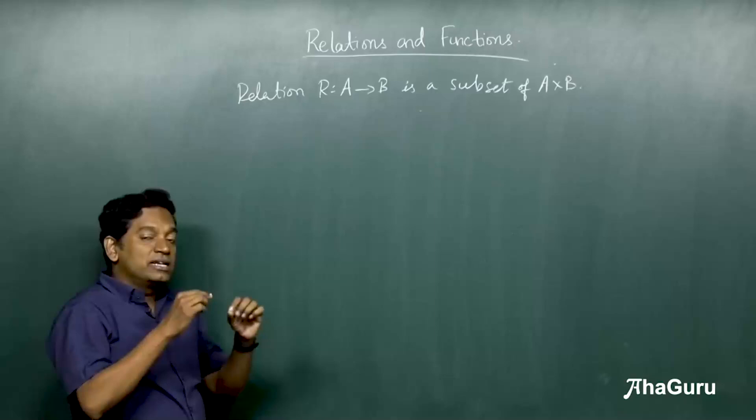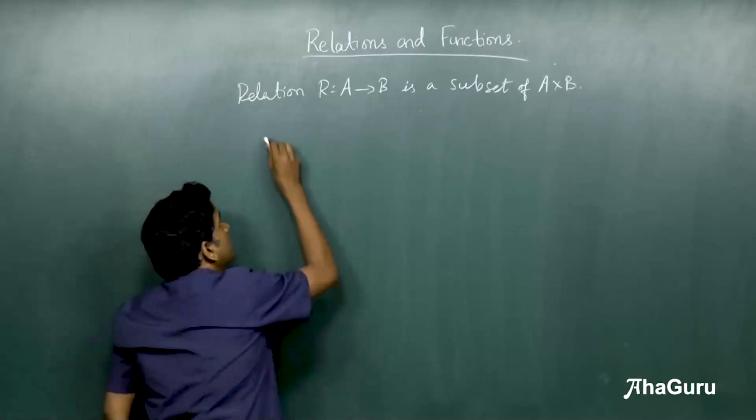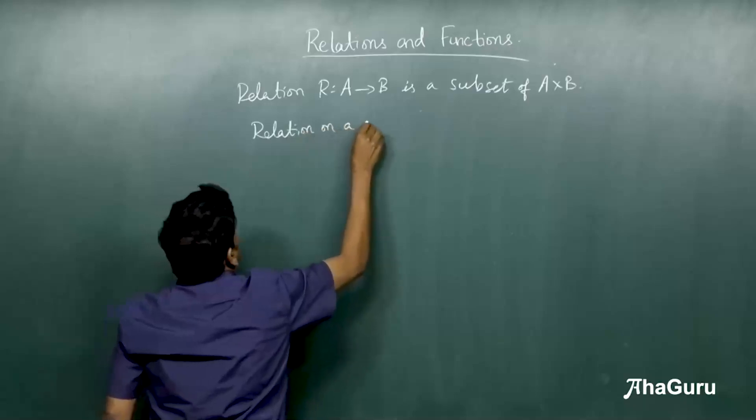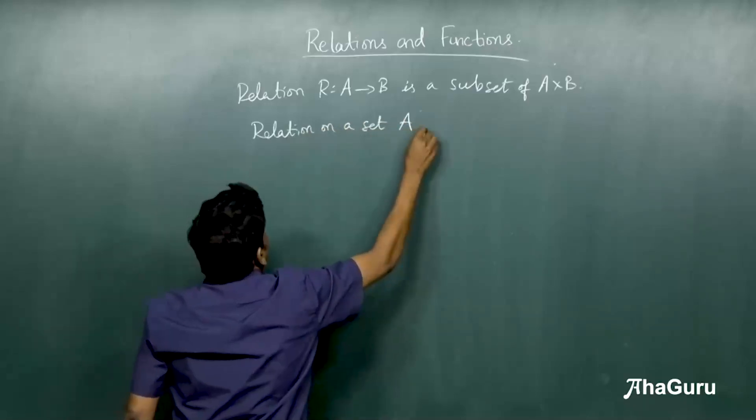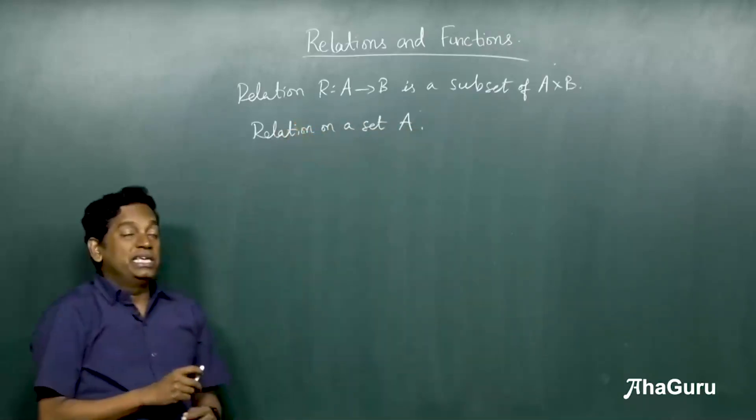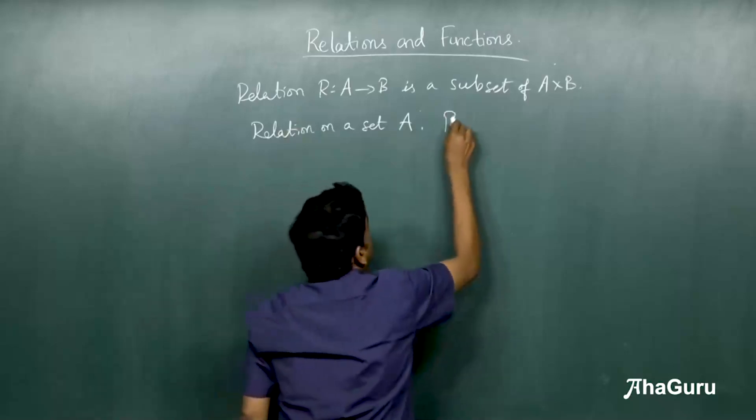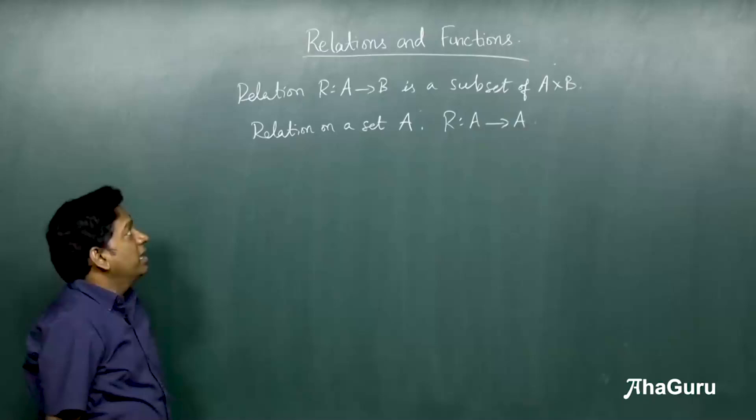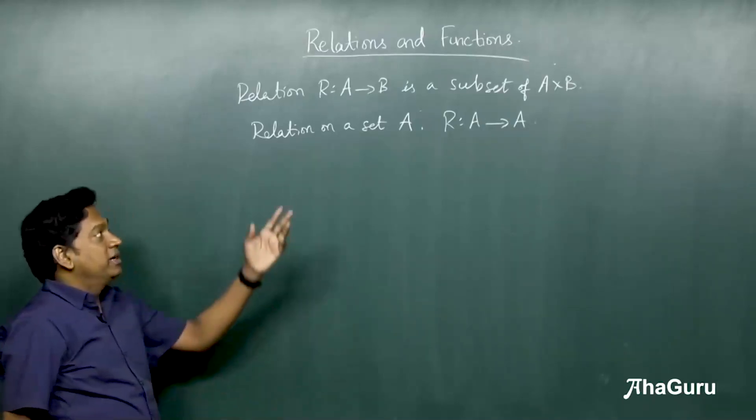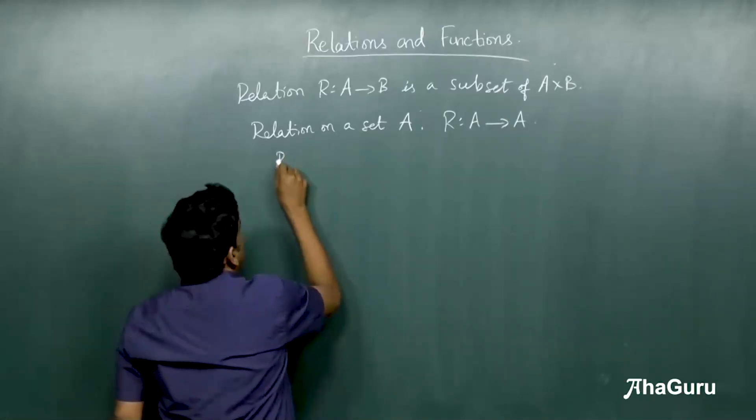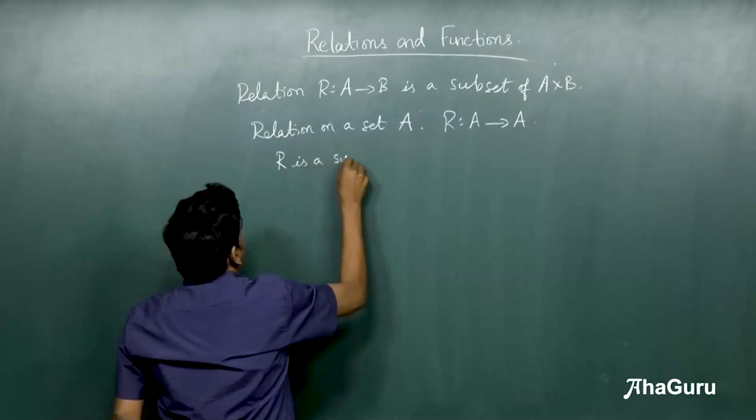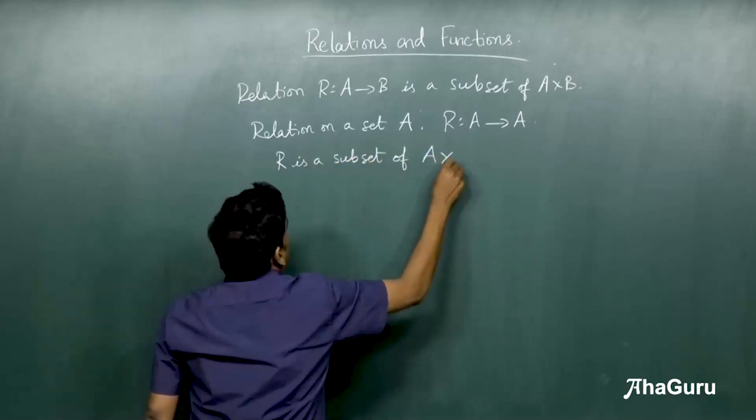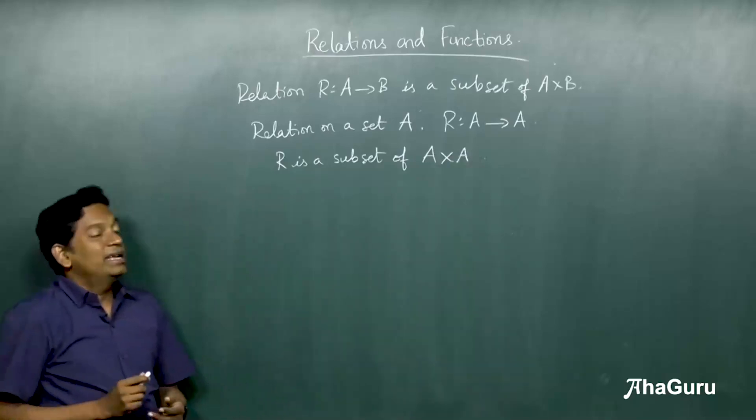Now, we are going to be interested in a special kind of relation, which is a relation on a set A, which means R is from A to A. And this obviously is a subset of A cross A.